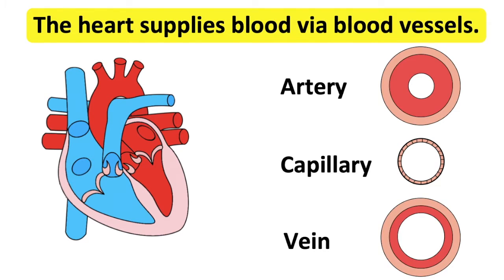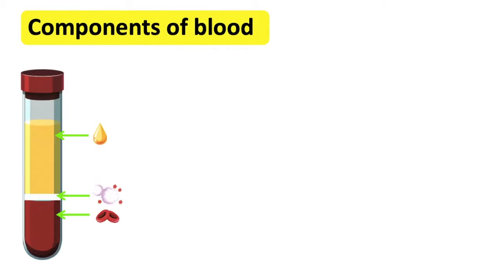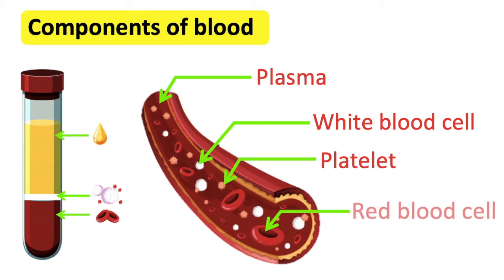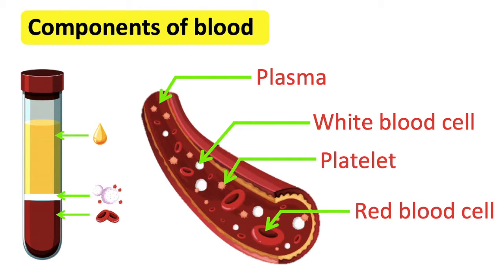Blood is transported around the body via blood vessels. The components of blood are red blood cells, white blood cells, platelets, and blood plasma.